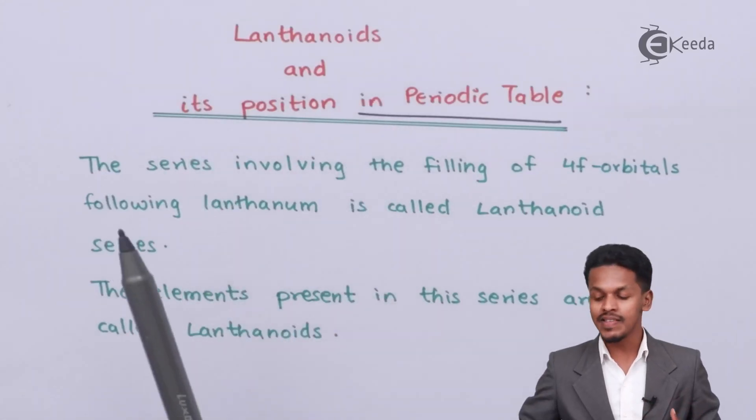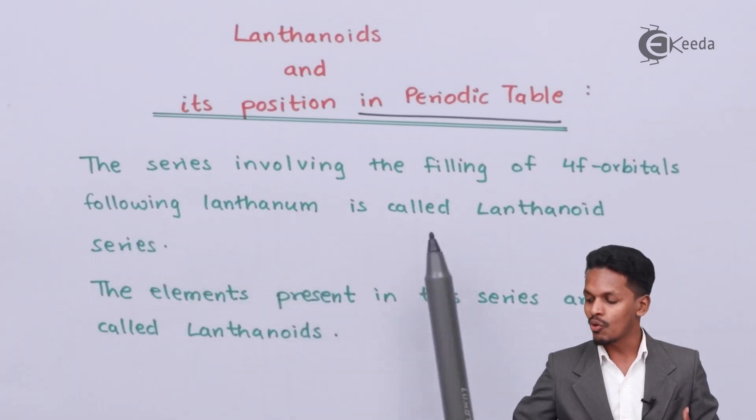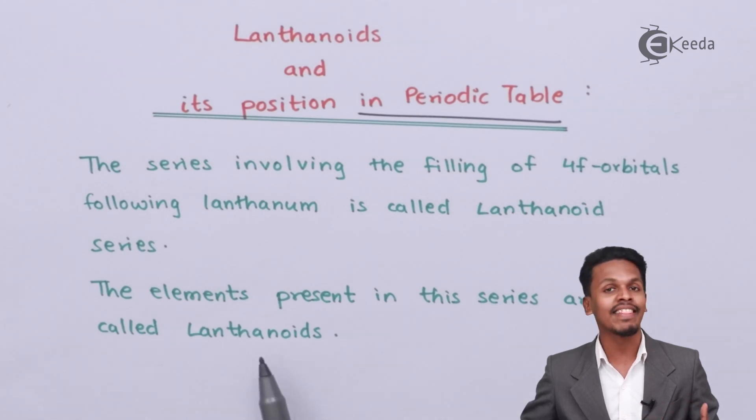Talking about lanthanoids, the series involving the filling of 4F orbitals following lanthanum is called the lanthanoid series. And the elements present in this series are known as lanthanoids.